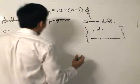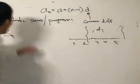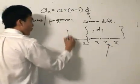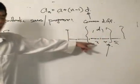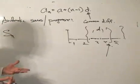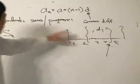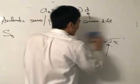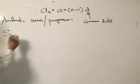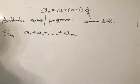We are finding the sum up to the nth term: a1 plus a2 all the way to a(n). We want a general formula so that when we put in the integer for the term we want to sum up to, we can immediately get it. Substituting the sequence function, we get: a plus (a + d) plus (a + 2d), all the way to a + (n−1)d. We are finding the sum up to the nth term.